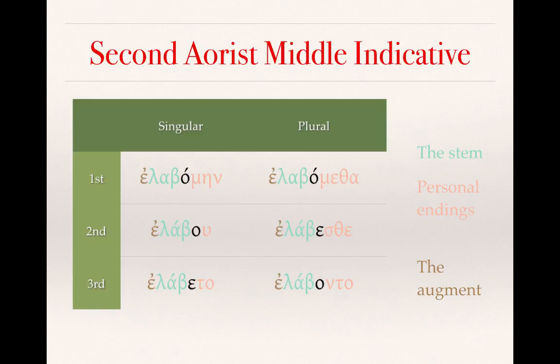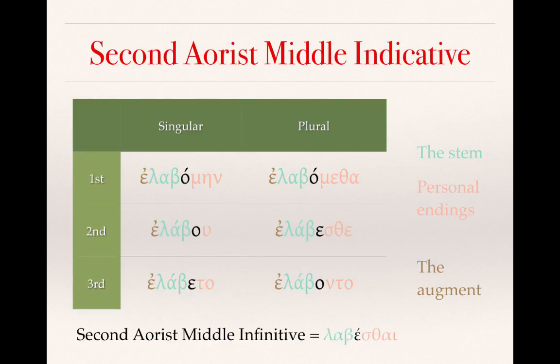Here is the form of the second aorist middle indicative, using the same color coding. The paradigm: elabomen, I received/took for myself; elabou, you took for yourself; elabeto, he/she/it took for him/her/itself; elabometha, we took for ourselves; elabeste, you all took for yourselves; elabonto, they took for themselves. And here is the second aorist middle infinitive: labethai, to take for oneself. Again, no augment.